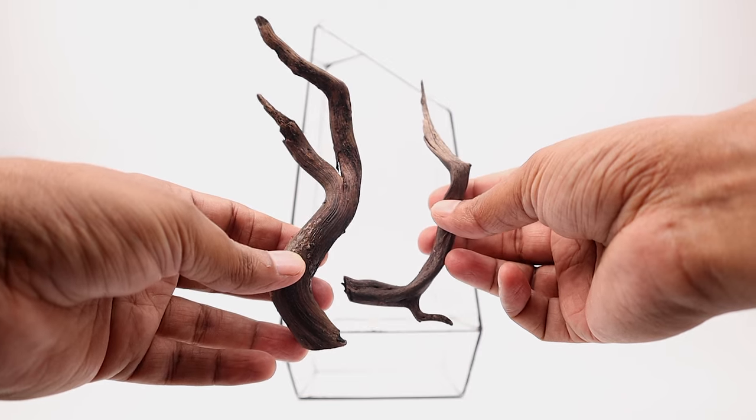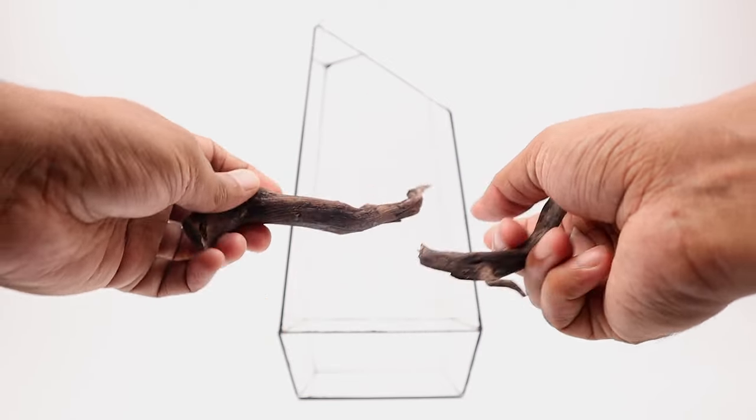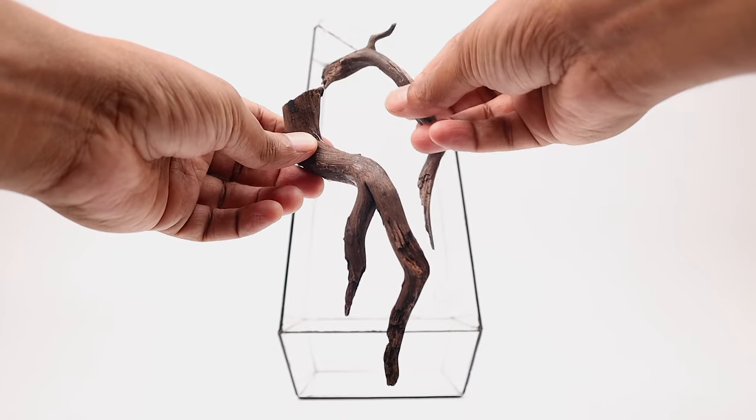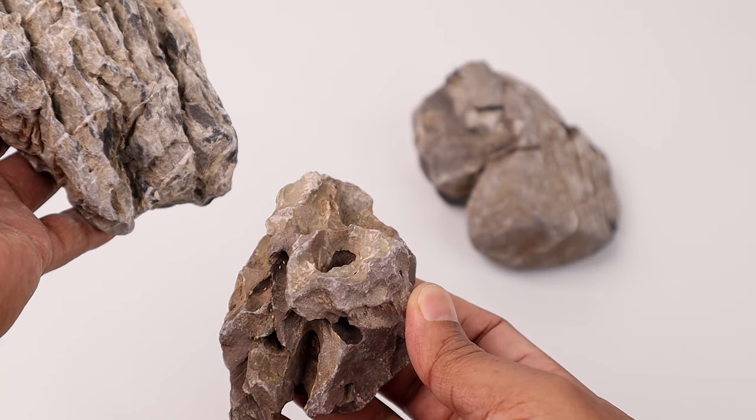I have chosen these two small pieces of aged driftwood from an earlier project for the hardscape. I want to keep the finished setup very lightweight in order to protect the thin glass. For the same reason I will not be using any stones or rocks for the hardscape.